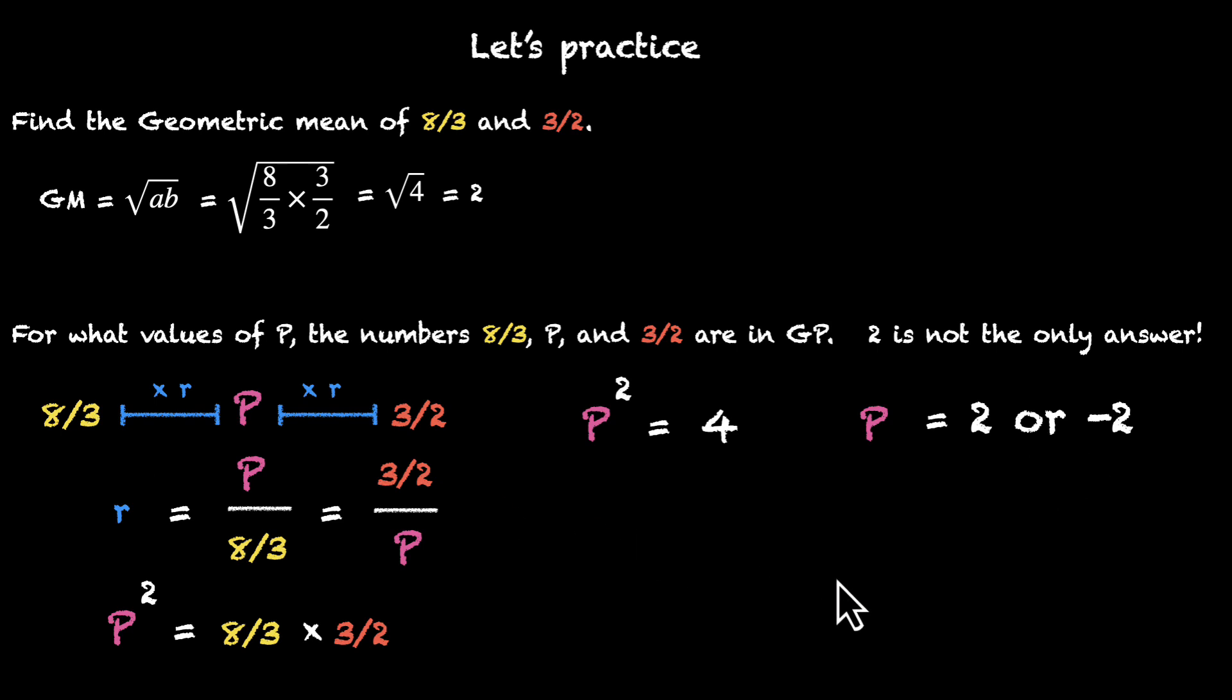If you don't believe me, here are the two GPs. Here's the first one. Here the common ratio comes out to be 3/4. If you plug in 2, you get r as 3/4. And if you multiply 8/3 by 3/4, you get 2. And if you do the same thing again, you get 3/2. Pretty neat.